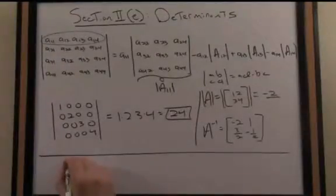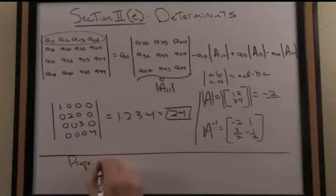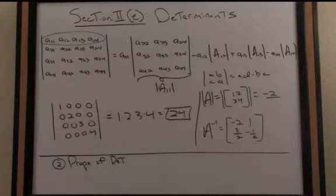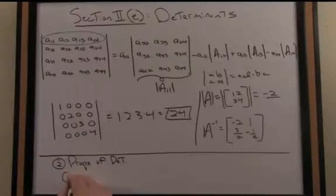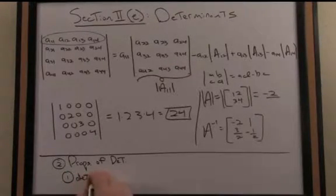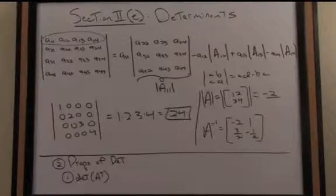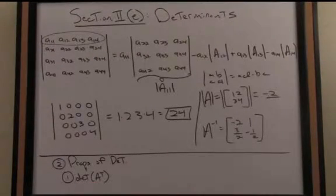Properties of the determinant. There are many of them, but I'm just going to mention two of the most prominent properties here. Number one, if I take the determinant of a matrix transpose - remember the transpose operation involves flipping the rows and columns of a matrix. So if I flip the rows and columns of a matrix,